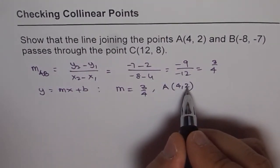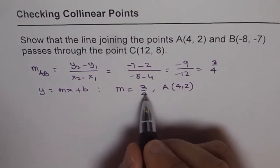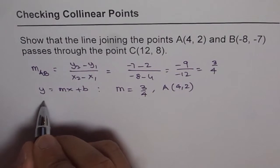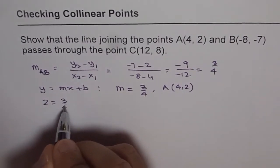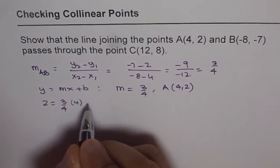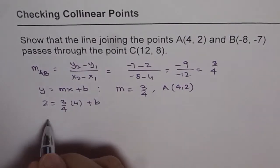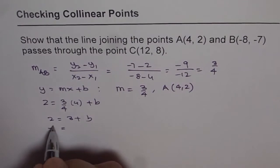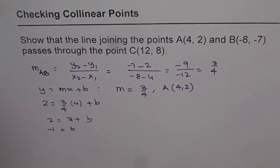That means x value is 4, and 2 is the y value. We substitute these in our equation. So we get 2 for y, slope is 3/4, x value is 4 plus b. So we get 2 equals 3 plus b, and from here, -1 is the value of b. 3 minus 1 is 2.